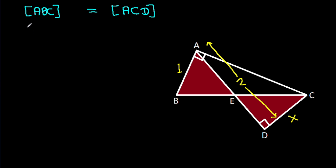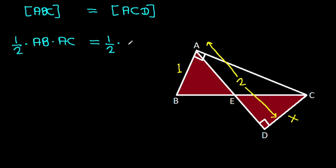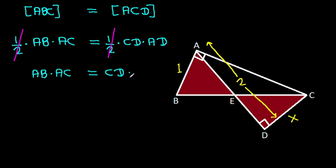Now, area of ABC equals one-half times base AB times height AC. This is equal to area of ACD, which is one-half times base CD times height AD. The one-half cancels, so AB times AC equals CD times AD.